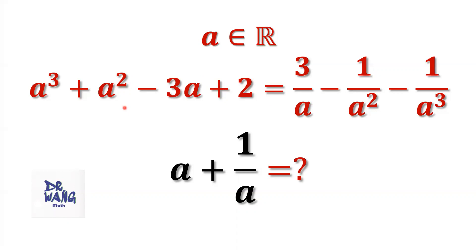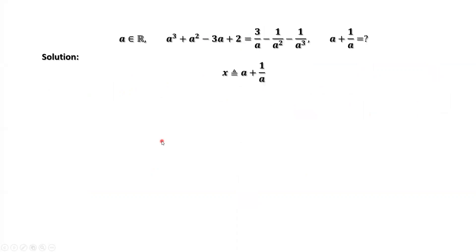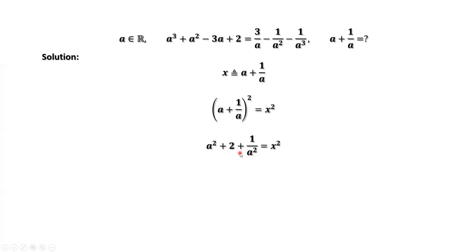Here we are going to discuss a different method to find the value of a plus 1 over a. We define x, the new variable, equals a plus 1 over a. Remember, a must be a real number. We square both sides of this new definition, and continue to simplify. We have a squared plus 1 over a squared equals x squared minus 2.